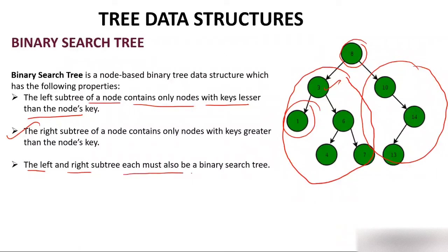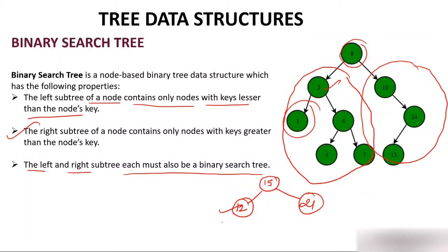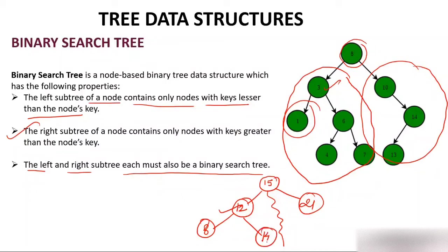The left and right subtrees must each also be a binary search tree. For every node, if a node is 15, the left child is less than 15 - it could be 12 - and the right child is greater than 15, that is it could be 21. If I consider node 12, its left child should be smaller while the right child should be greater. Can I write 22 here? No, not according to the property, because 22 is in the left of 15 so it should be less than 15 but greater than 12. The possibilities are 13 or 14. If I say it's 14, then yes, it is a valid binary search tree.